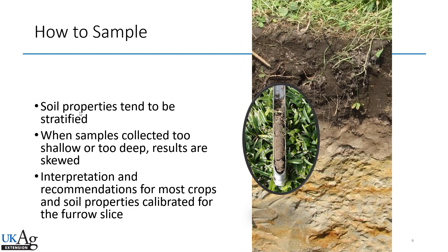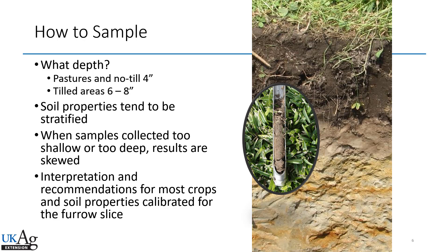Interpretation and recommendations for most crops and soil properties are calibrated to the acre furrow slice. In pastures and no-till, we're looking for a four-inch sample. In tilled areas, we want to represent the tillage depth, which is typically about six to eight inches. People often say their roots are deeper than that, but the soil test was correlated through scientific experiments to this specific depth. That's the depth we're shooting for.